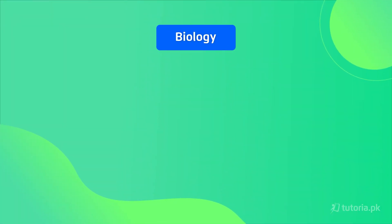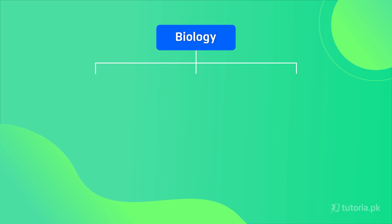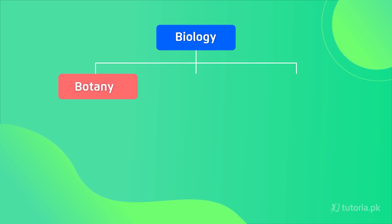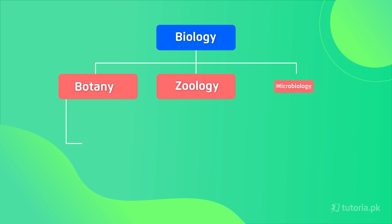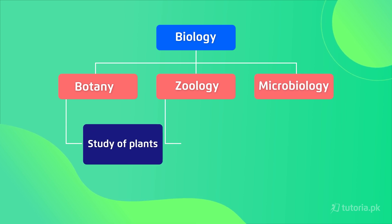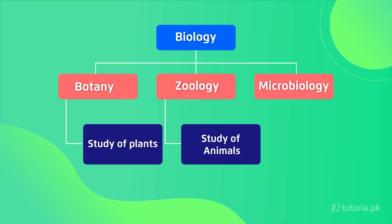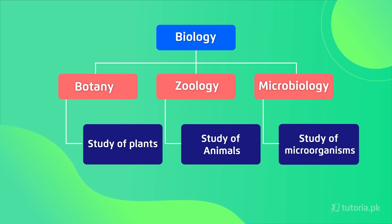Biology has three major main branches that deal with different aspects of life. These are botany, zoology, and microbiology. Botany is the study of plants, zoology is the study of animals, while microbiology is the study of microbes.